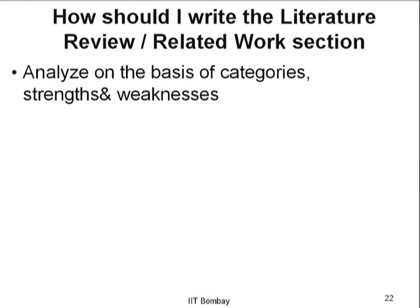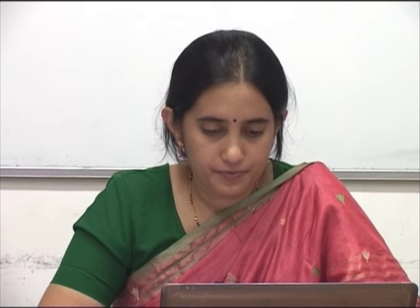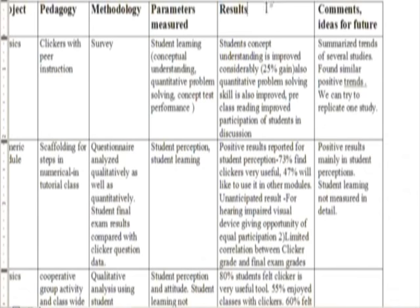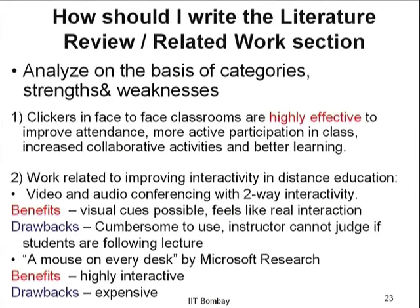Then what one does — and the table will be very handy here — is further analyze the papers on the basis of strengths and weaknesses. Using this table, one can look at the results section and see which papers report positive results and which report neutral or negative results. One can read notes made under methodology and comments to decide the strengths and weaknesses. Perhaps after reading a few papers, you may want to add a new column called strengths. The analysis has to be done on the basis of strengths and weaknesses.